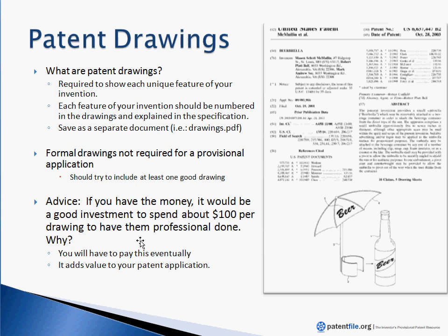If you do have the extra money right now, paying a draftsperson anywhere from $100 to $200 per drawing is actually a very good investment for two reasons. One, you'll have to pay this money eventually, so you might as well pay it now. Having formal drawings adds credibility to your provisional patent application — if you're presenting to investors, it looks more professional. I've even seen inventors put their drawings into PowerPoint slides when speaking about their invention, so you get a lot of value for your money.